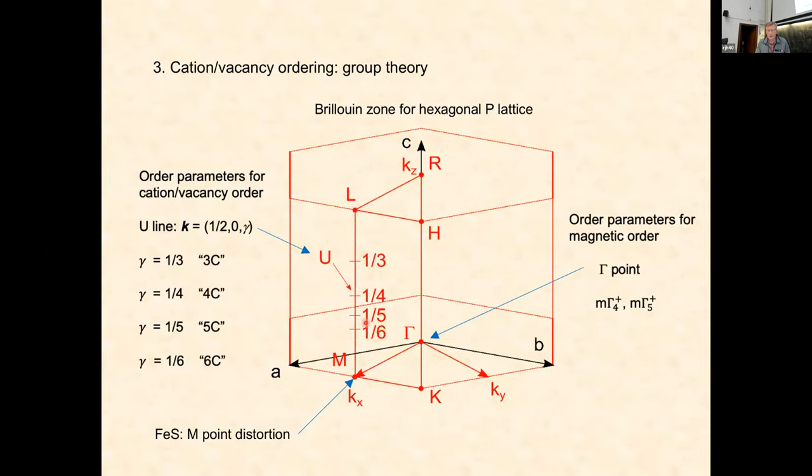The vacancy ordering schemes, this is a Brillouin zone in reciprocal space. The different vacancy ordering schemes—one-third, one-fourth, one-fifth, one-sixth even—you can see they're all related along this line between the L point and the M point. They're all closely related by symmetry. The magnetic ordering is always associated with the gamma point, so we've got to interact magnetic order parameters with these order parameters on the U line.